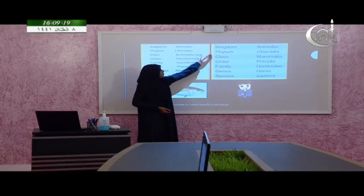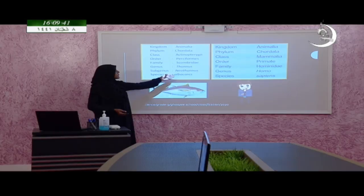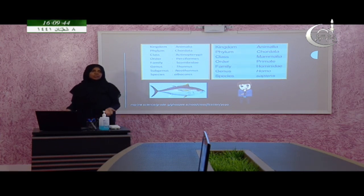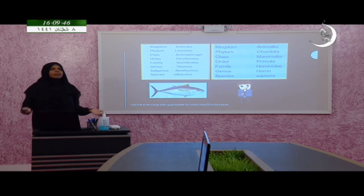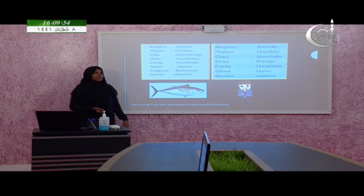You have to learn only kingdom, phylum, class, order, family, genus, species — though sometimes you may see sub-genus, sub-class, sub-phylum. The scientific name for this tuna is Thunnus albacares. Like that, each and every organism has a scientific name. By using those scientific names, we can identify organisms and easily search for more information.